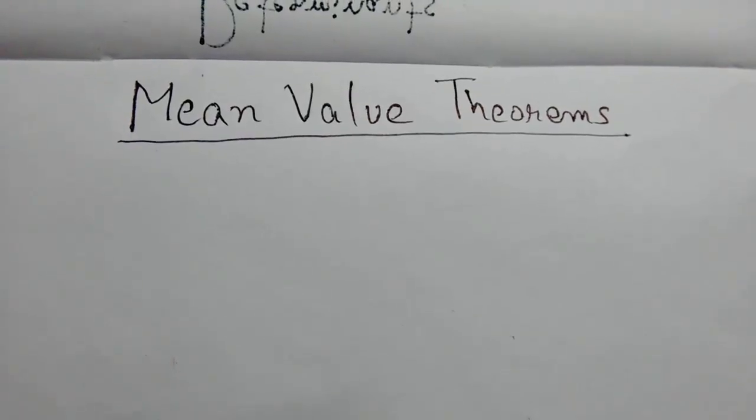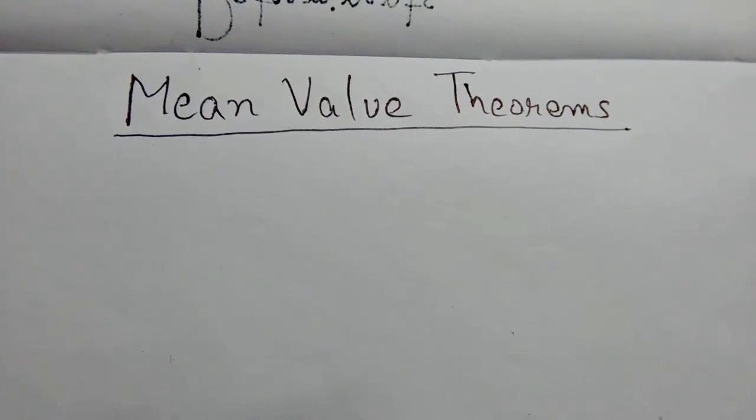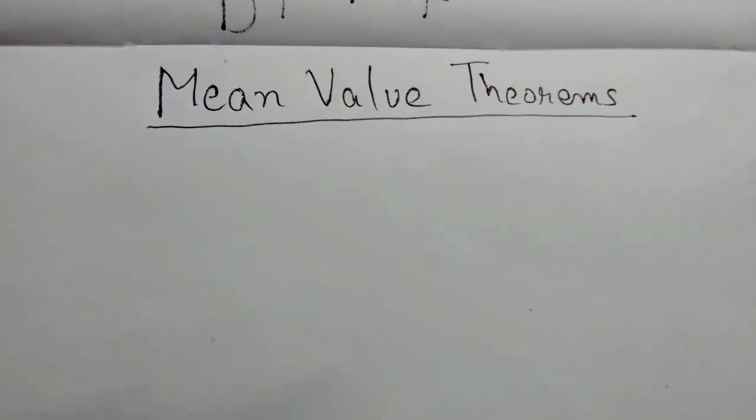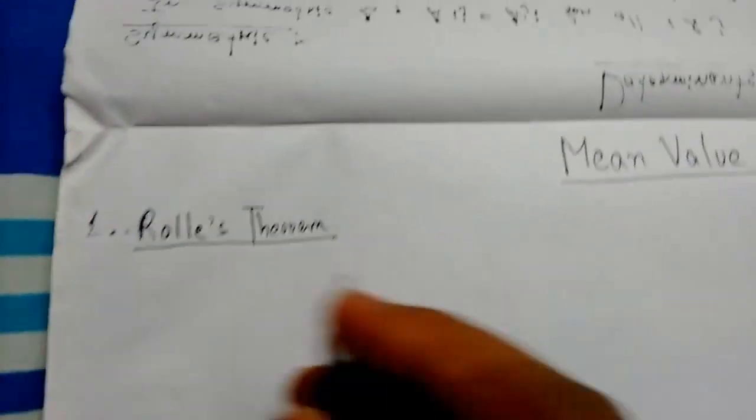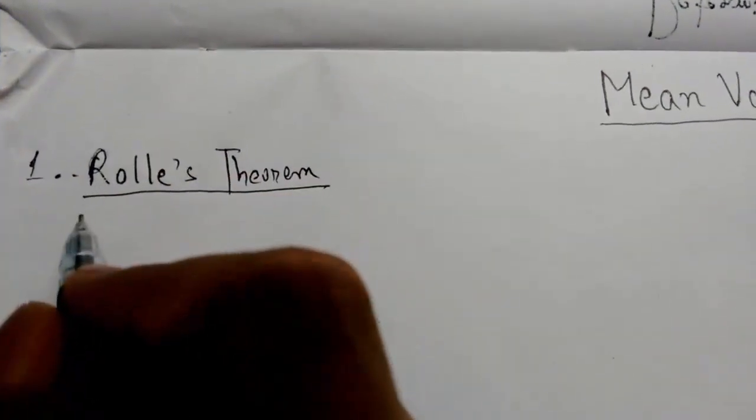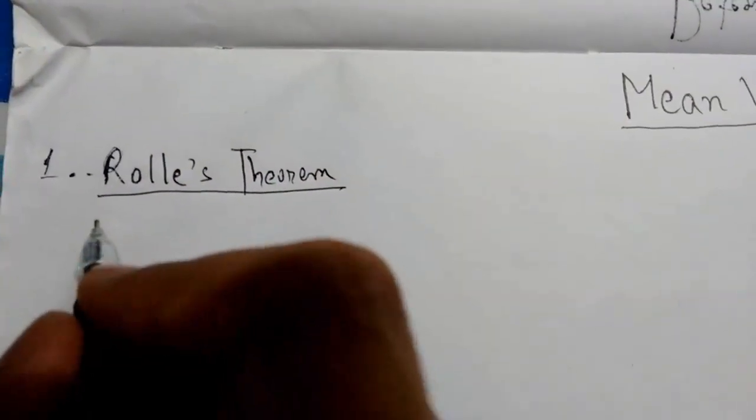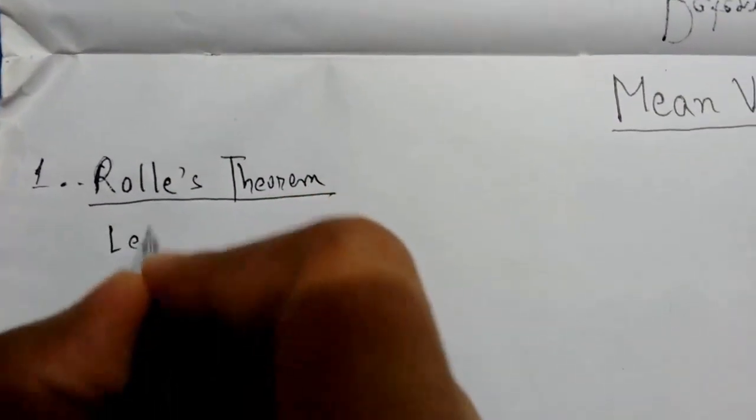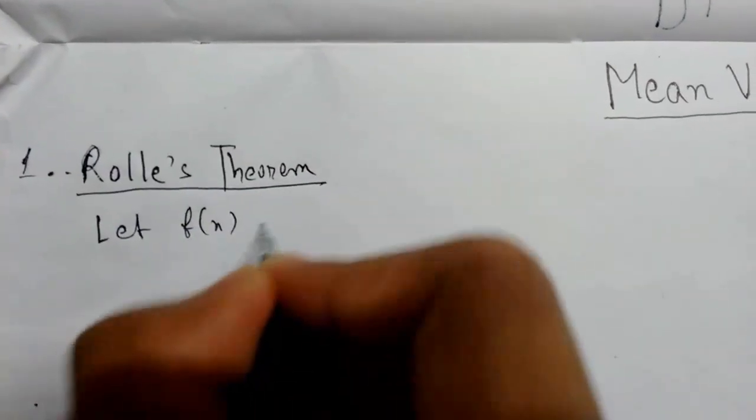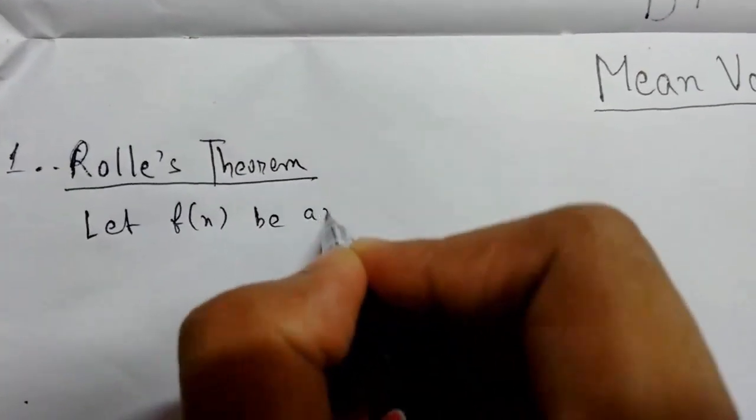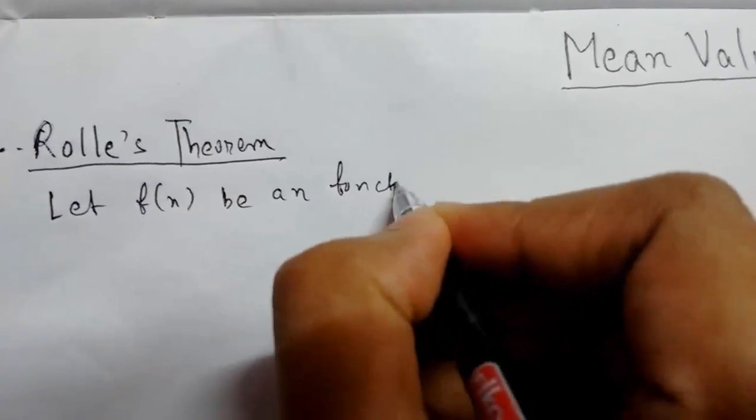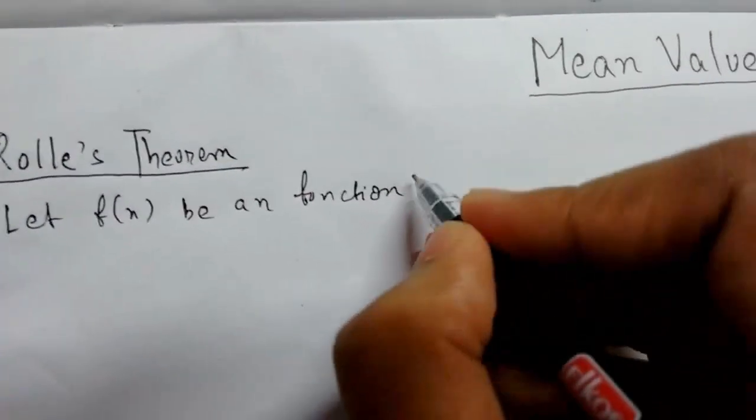Welcome everybody. In this video lecture we'll be learning about mean value theorems, so let's get started. Number one is Rolle's Theorem. Let us get on with the definition. So let f(x) be a function on the closed interval a comma b.